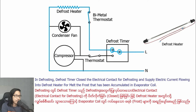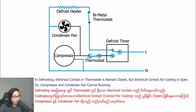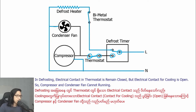The frost that has accumulated in the evaporator coil is melted. During defrosting, the electrical contact in the bimetal thermostat remains closed, but the electrical contact for cooling is open, so the compressor and condenser fan cannot run.